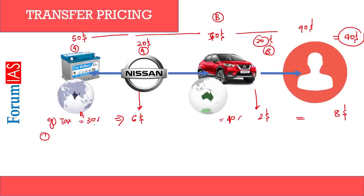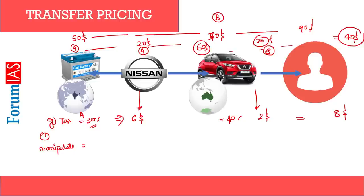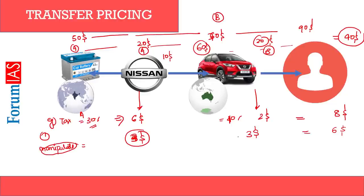Now, the company says: I am paying more tax here — $6 on $20. So what do they do? They manipulate or misquote the prices. They change the pricing — instead of $70, the transfer is quoted at $60. Finally, the sale price becomes $90. The profit margin changes: now company A shows only $10 profit, paying $3 tax at 30%. Company B shows $30 profit from $60 to $90, paying $3 tax at 10%. Overall tax paid is only $6. Just by manipulating or misquoting the prices, they end up paying a lesser amount of tax.